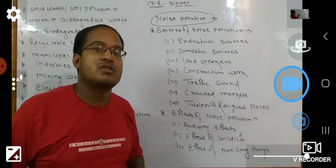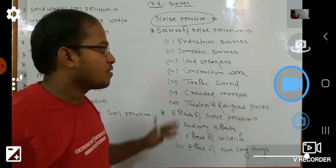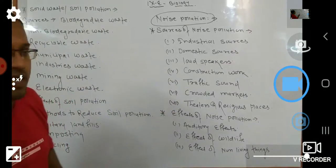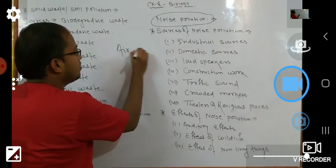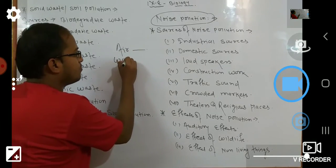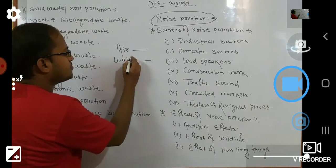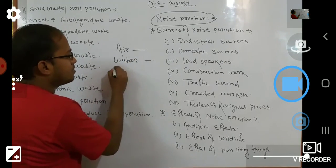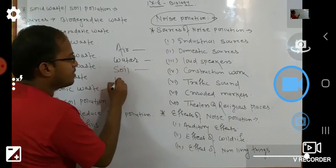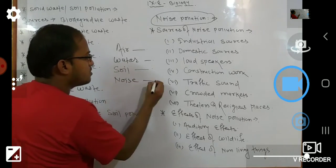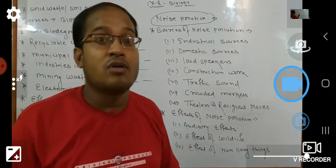The definitions of pollutions are generally different in different environments because pollutions are of different types. Pollutions may be air pollution, water pollution, soil pollution, noise pollution, thermal pollution, or radioactive pollution.